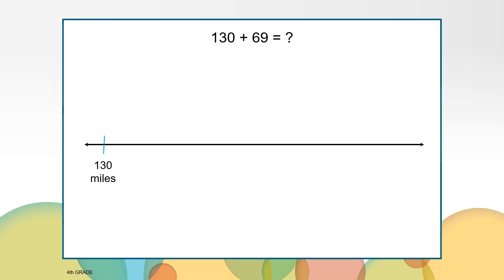We could also use a jump back strategy using the estimate. When we estimated, we thought of 69 as 70. Since 70 is one more than 69, I would have added one extra so I can jump back one to get to 199 miles.